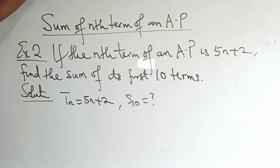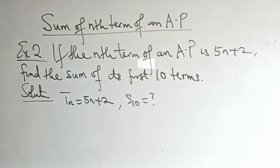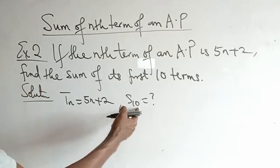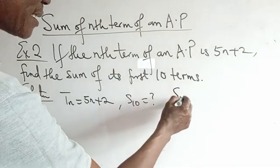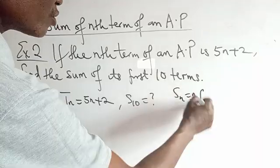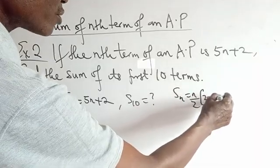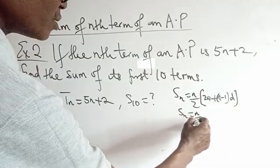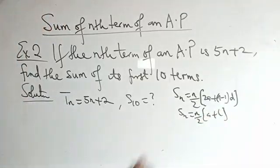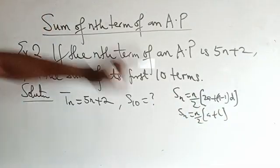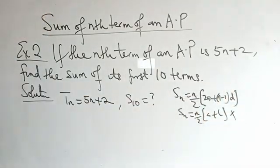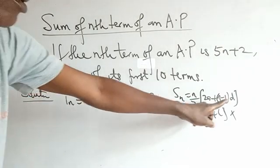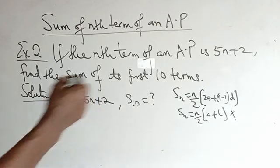We are looking for S10. Our formula is S10 = n/2 × (2a + (n−1)d), or S10 = n/2 × (a + l). We are not given the last term, so we cannot use the second one. We have to use the first formula, and for that we need the first term and the common difference.